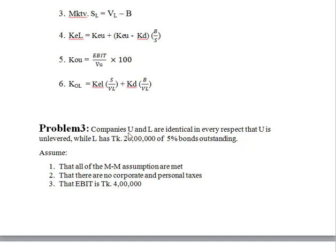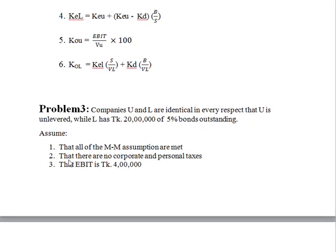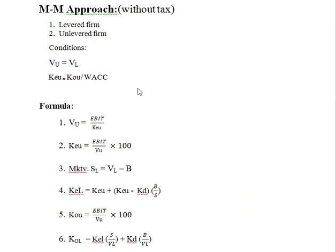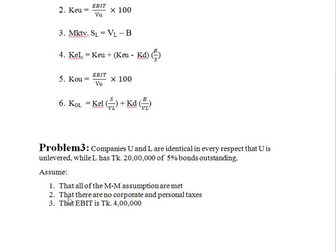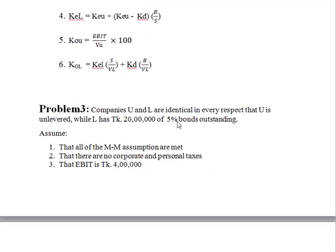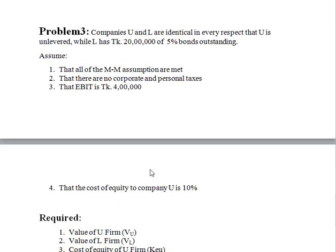U is unlevered while L is levered because of the 5% bond. Assume all Modigliani-Miller assumptions hold. There are no corporate and personal taxes. EBIT is given as 4 lakhs. The cost of equity of company U, KEU, is 10%.